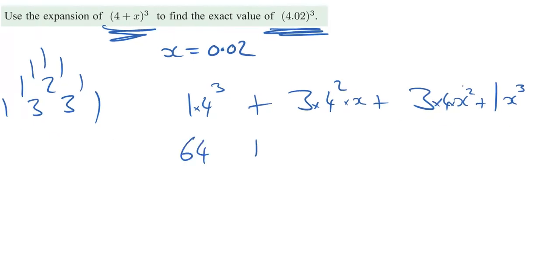And we are now going to just work this out nice and quickly. So we're going to have a 64, 4 squared is 16 times 3 is 48, 3 times 4 is 12, and the x cubed on the end. So there's our expansion.